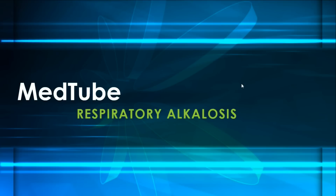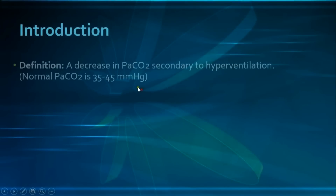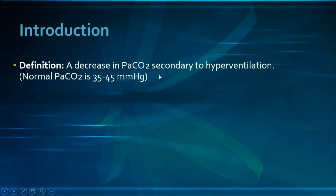Hello everyone and welcome to MedTube channel presenting another video on respiratory alkalosis. Respiratory alkalosis is defined as a decrease in the PaCO2, which is the partial pressure of the arterial carbon dioxide, secondary to hyperventilation, which is the exact opposite to respiratory acidosis. The normal PaCO2 is 35-45 mmHg.